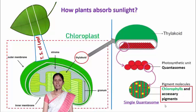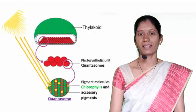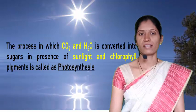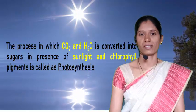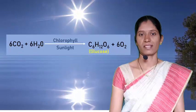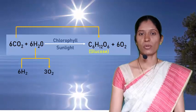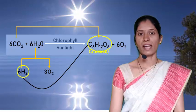Quantasomes contain photosynthetic pigments like chlorophylls and carotenoids, as well as enzymes required for photosynthesis. These pigments trap sunlight energy and help convert carbon dioxide and water into sugars. Thus during photosynthesis there is a conversion of sunlight energy into chemical energy. The process in which carbon dioxide and water is converted into sugars in the presence of sunlight and chlorophylls is called photosynthesis. In the general equation of photosynthesis, carbon dioxide is reduced to carbohydrates, and water molecules split into hydrogen and oxygen in the presence of sunlight. These hydrogen molecules combine with carbon dioxide and reduce it to carbohydrates.